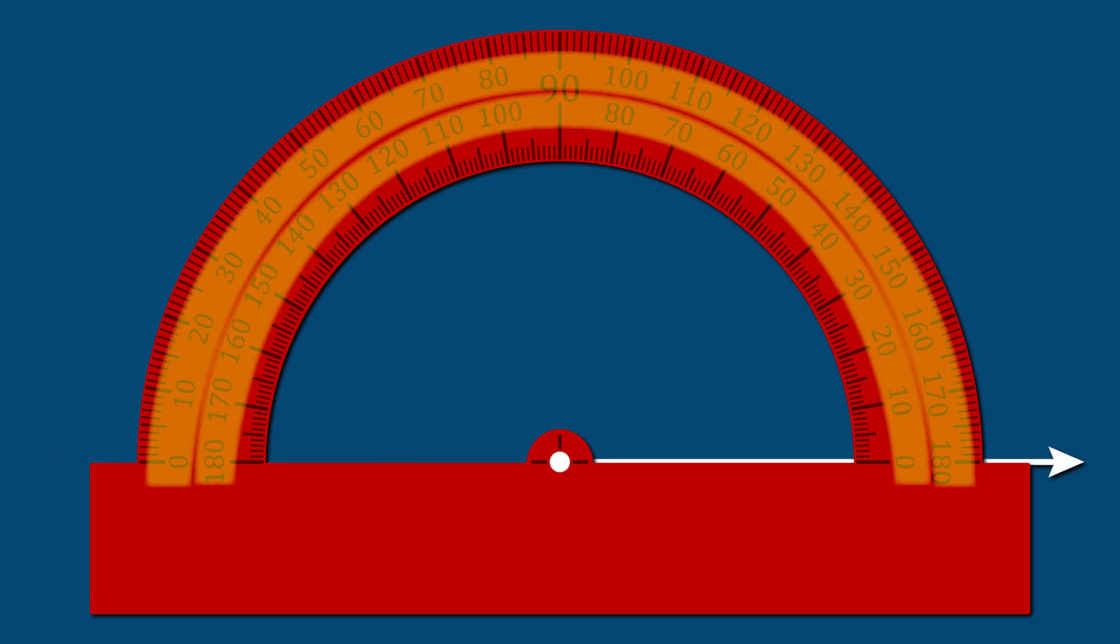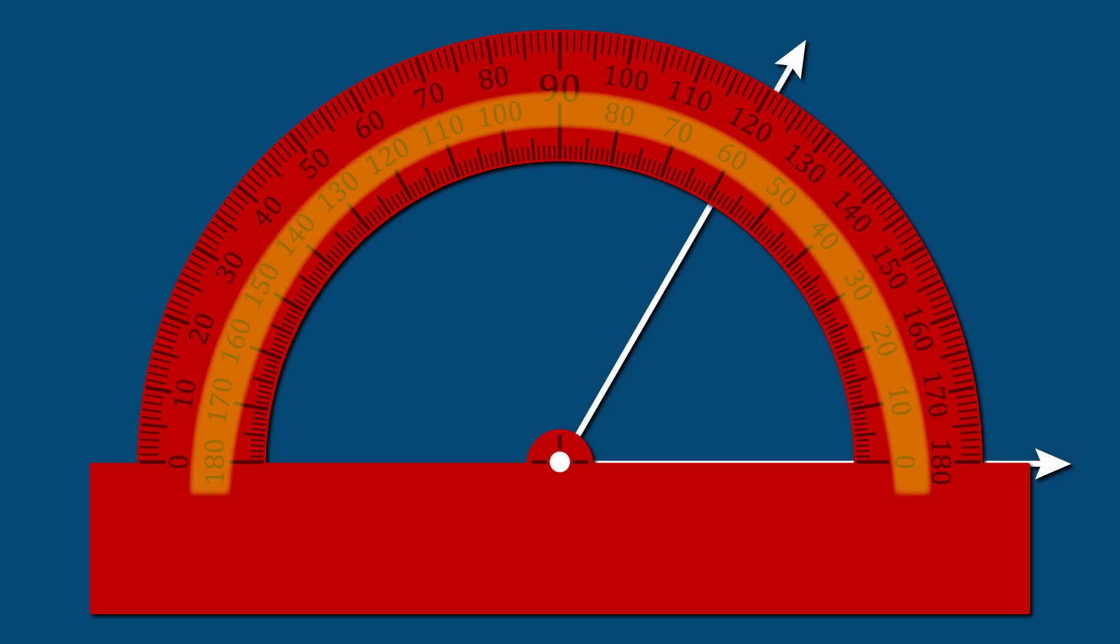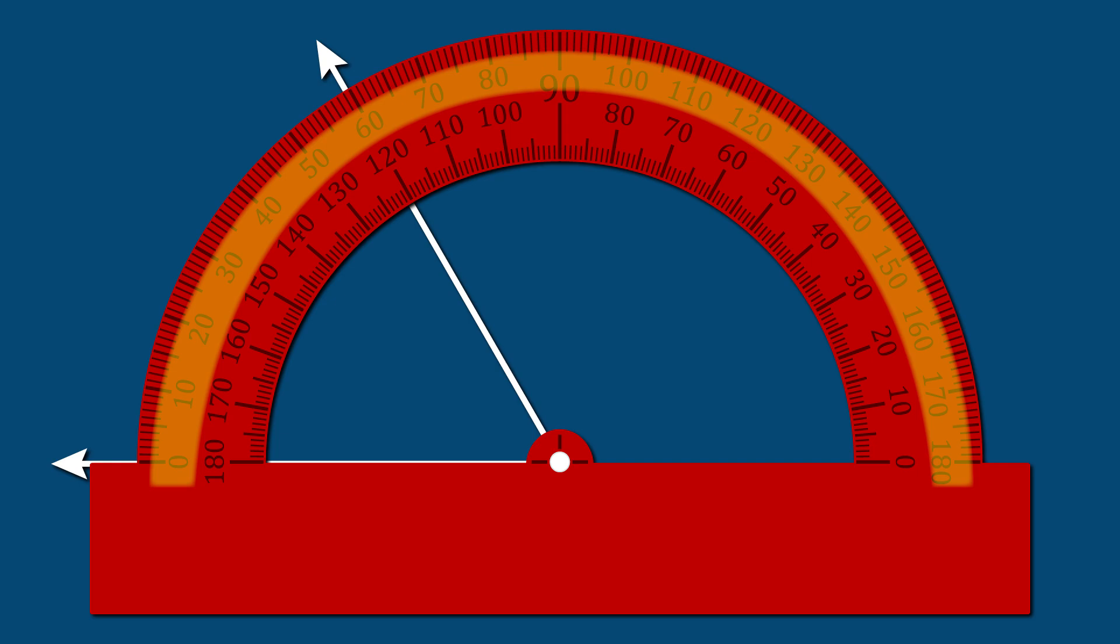To determine the measurement, we will need to decide to use the interior or exterior scale. This can be determined by finding which side, the interior or exterior scale, is the one in which the baseline we are measuring crosses zero. If the line we measured has the zero-degree mark on the interior, use the interior scale. If the zero-degree mark is on the exterior, use the exterior scale.